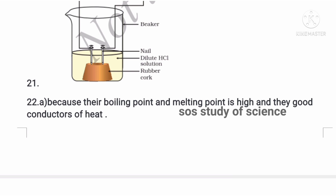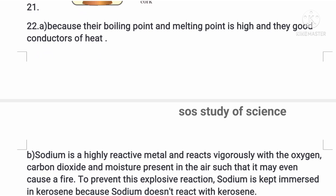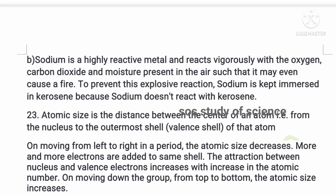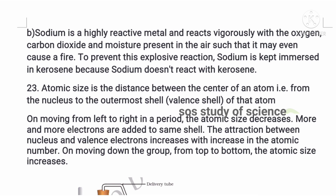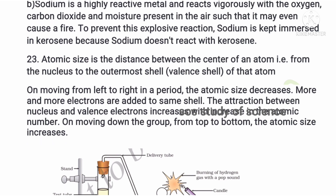The twenty-second question asks: give reasons why metals are used for making vessels — because metals have high melting point, high boiling point, and are good conductors of electricity. Sodium metal is stored in kerosene because sodium is a highly reactive metal; when kept open in air it catches fire. The twenty-third question asks about atomic size: atomic size is the distance from the nucleus to the outermost shell. Moving left to right, atomic size decreases; from top to bottom, it increases.